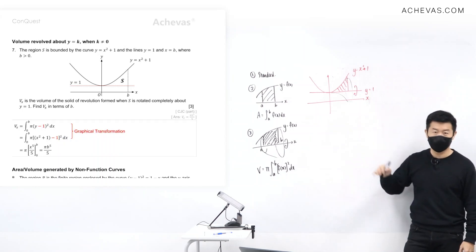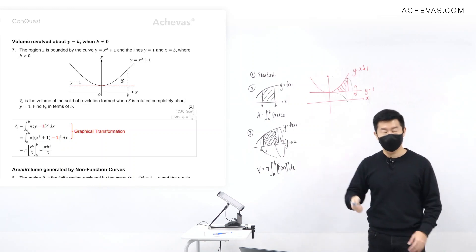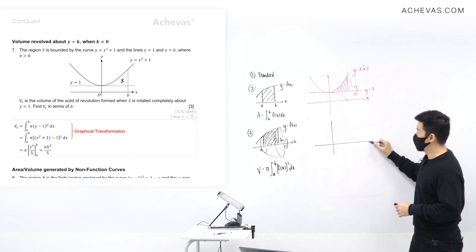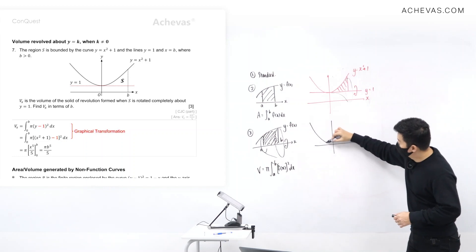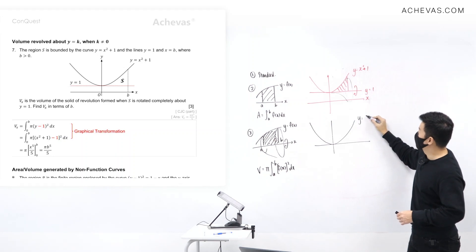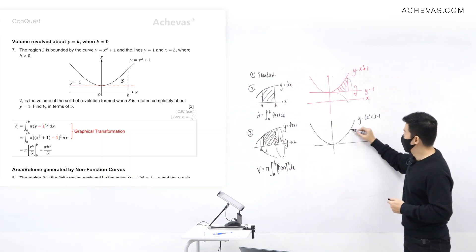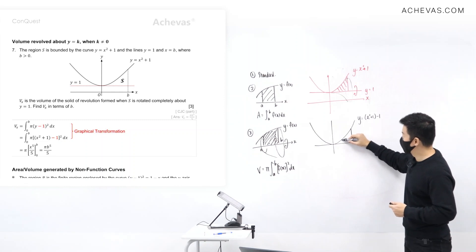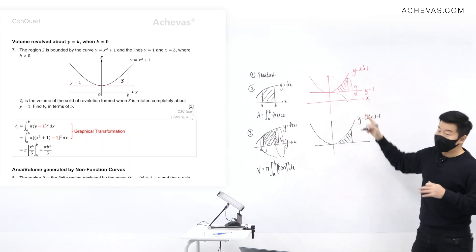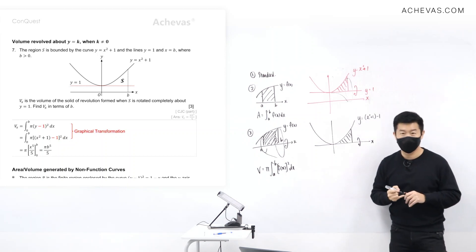So what can I do? I'll do the same thing I discussed just now — I'll do a transformation. Since we are rotating about the line y=1, I'll take the region given to me and translate it by one unit in the negative y direction. This generates a scenario where, when I rotate this new region about the x-axis, it gives me exactly the same kind of solid.